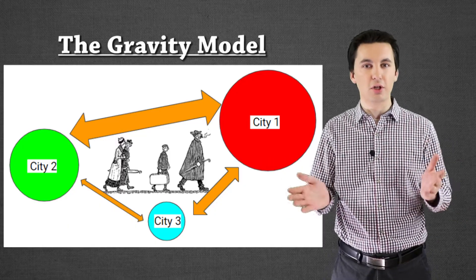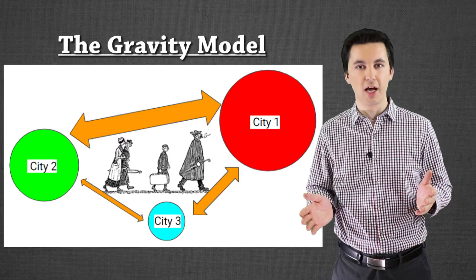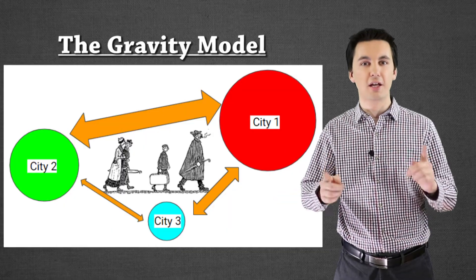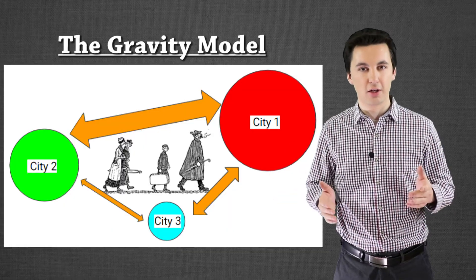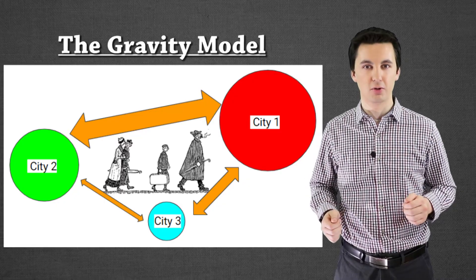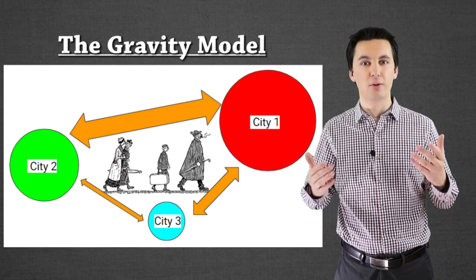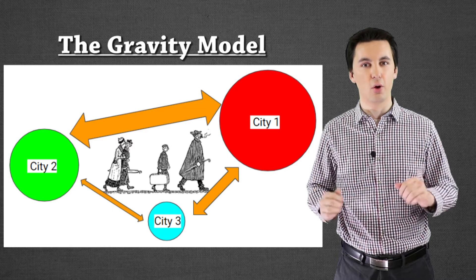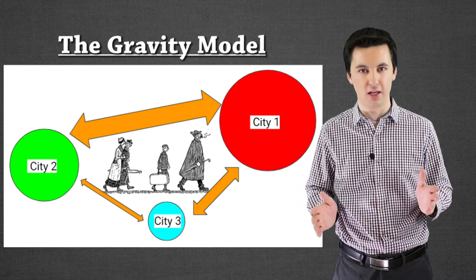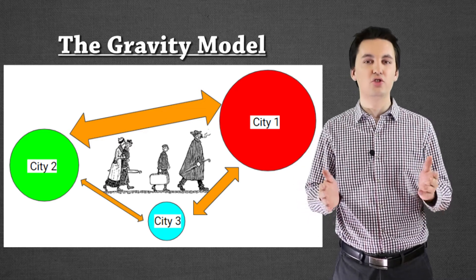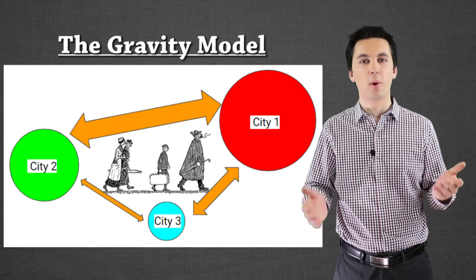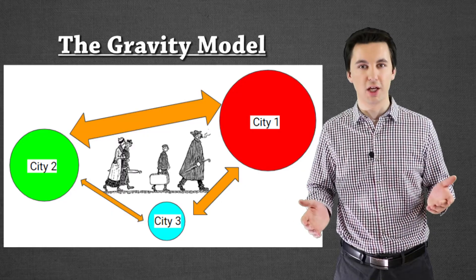Really what it comes down to is: if you're closer to a city you're going to interact with it more, and if that city is larger you're going to interact with it more — because of the opportunities, the services, the wealth and people located there. This model can show us different migration patterns, where trade is going to happen, or where businesses might even relocate to.